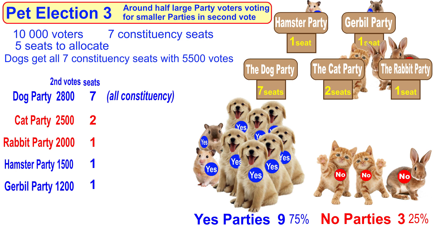We've now got nine seats for the yes parties and the no parties have just got three. So although the dog party voters were only 55%, the actual number of seats gained is 75% — a huge increase. And that's the effect of tactically voting for the smaller parties.